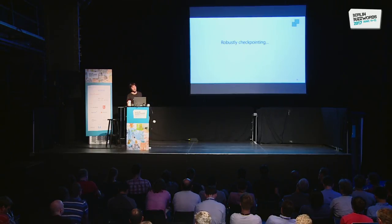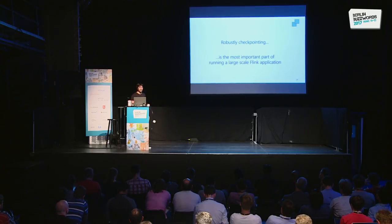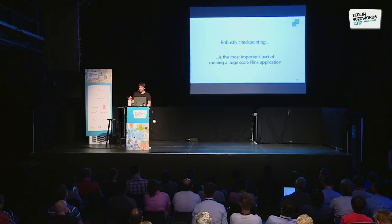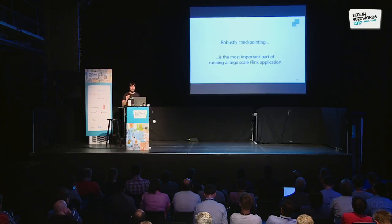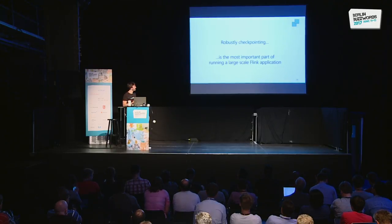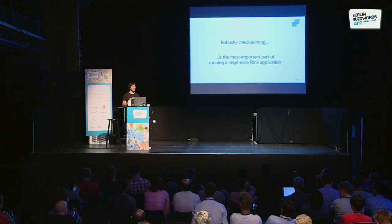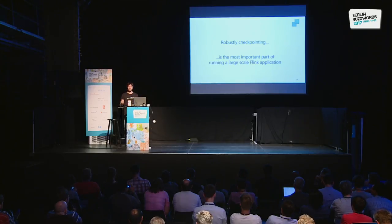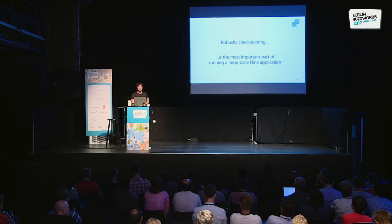The most important lesson for running large-scale Flink applications is that robustly checkpointing is the most critical part. I'd like to go into how you get insights about whether checkpoints are going smoothly — if something causes them to take much longer than expected or cost much more than imagined, how do you get to the bottom of it? What are the causes, and what are the ongoing trends to continually improve on that?